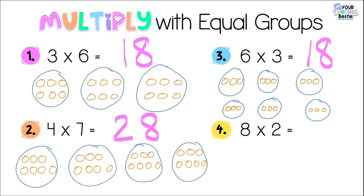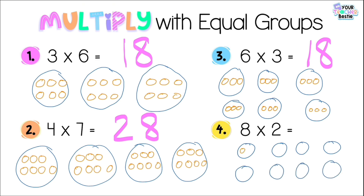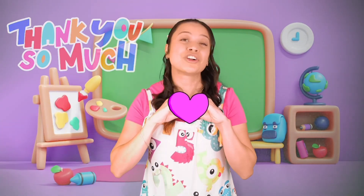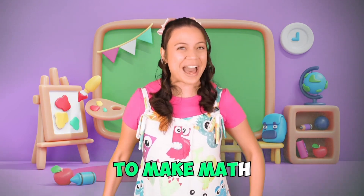Number four: eight times two, or eight groups of two. I'm going to draw eight groups — one through eight — then draw two objects inside each group. I'll skip count by two to get the total: two, four, six, eight, ten, twelve, fourteen, sixteen. So our product is sixteen. Good job besties! That's the end of our math lesson. Thank you so much, math bestie, for learning with me today. Make sure you keep on practicing to make math easy peasy.